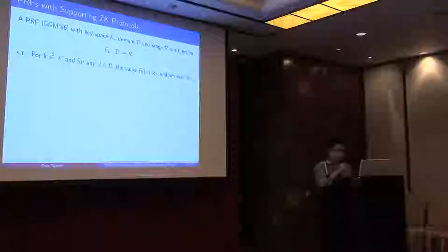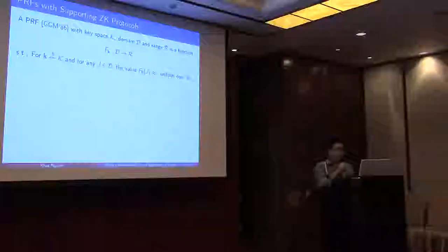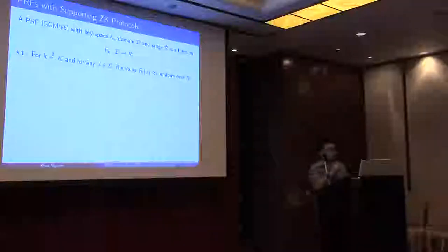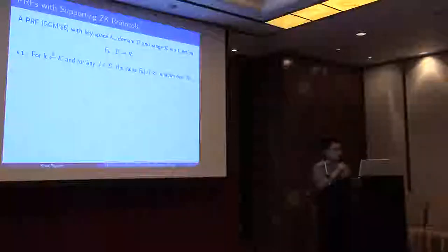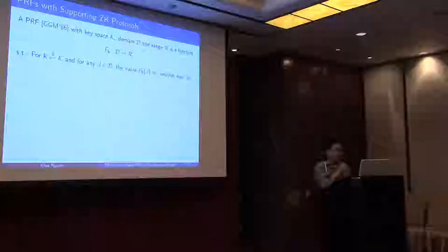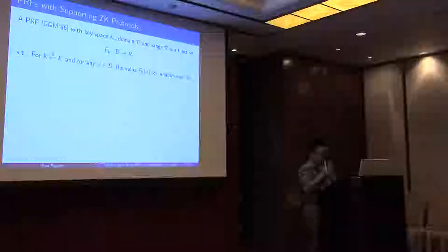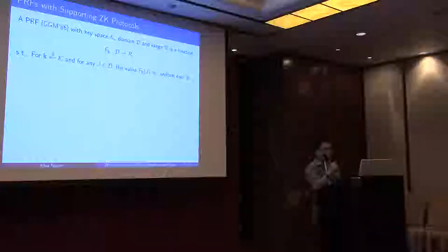Pseudo-random functions, or PRFs, are deterministic functions that look like a truly random one. A PRF with key space K, domain D, and range R is a function F_K that maps D to R, such that for a uniformly random key K and for any input J, the value F_K(J) should be computationally close to uniform over the range. PRFs are a fundamental notion and have applications everywhere in cryptography.